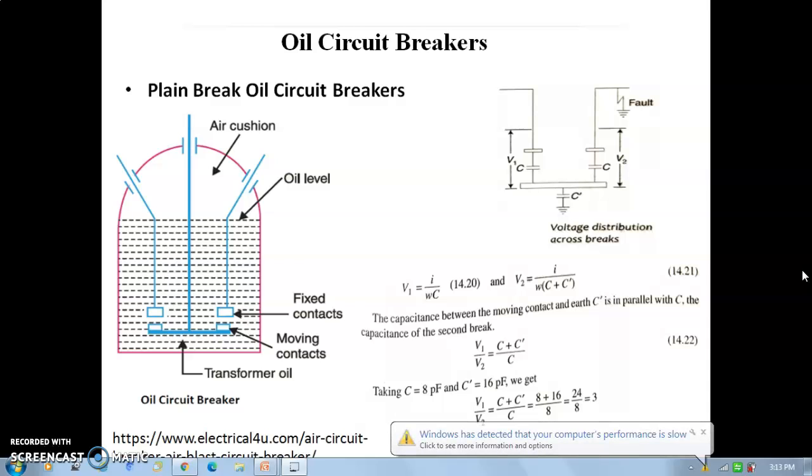When a fault occurs, the circuit breaker contacts open in oil so that an arc is struck between them. Due to the heat of the arc, the surrounding oil of the contacts evaporates and hydrogen gas is produced at higher pressure. The oil is pushed away from the arc and hydrogen gas bubbles surround the arc, so that the adjacent portion of the contacts are surrounded by bubbles.